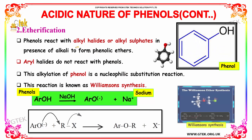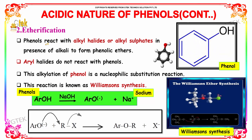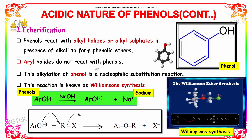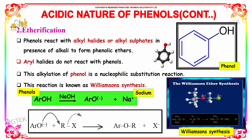Now let us study etherification. Phenols react with alkyl halides or alkyl sulfates in the presence of alkali to form phenolic ethers. Aryl halides do not react with phenols. This alkylation of phenol is a nucleophilic substitution reaction, also known as Williamson synthesis.